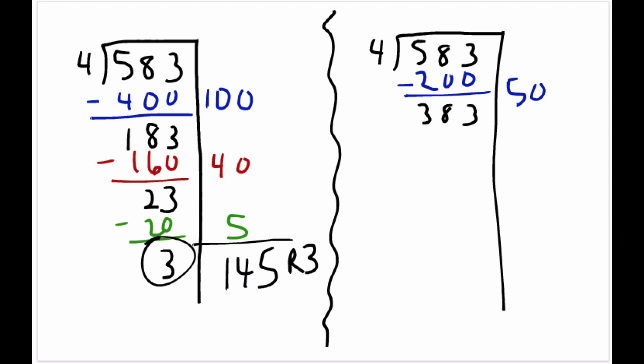And the student might say, well, 50 worked once, let's do it again. So there's our another 200 and that gives us 183.